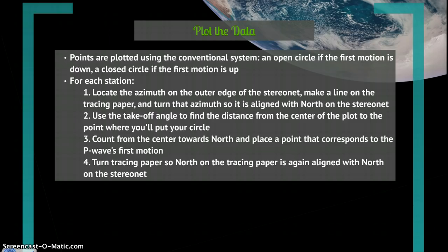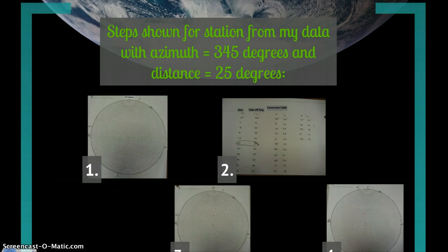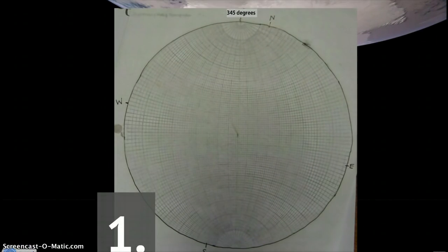Then turn the tracing paper so north on the tracing paper is again aligned with north on the stereonet. Now let's take a look at those steps. These steps are shown for a station from my data from the 2011 Japan earthquake, and the azimuth for this point is 345 degrees, and the distance from the earthquake's epicenter to this station is 25 degrees.